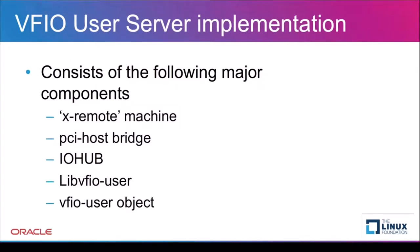The QEMU server consists of the following major components: a new machine type called x-remote, which runs QEMU without any CPUs; a new PCI host bridge that, unlike traditional host bridges which link a PCI device with a vCPU, connects the PCI devices to the QEMU client; an IO hub that handles the interrupts generated by the PCI devices; the libvfio-user library from Nutanix, which converts the VFIO protocol to its own set of callbacks and data structures; and lastly a VFIO user object which glues the library and PCI devices on the server.